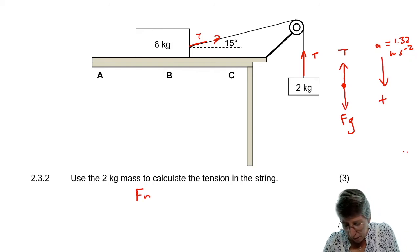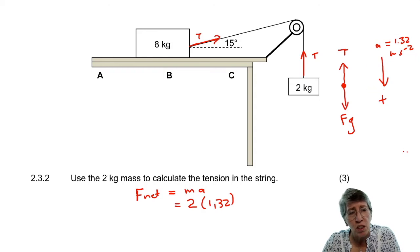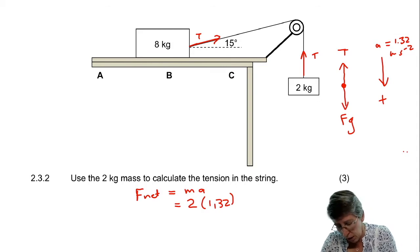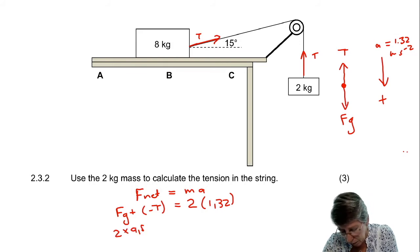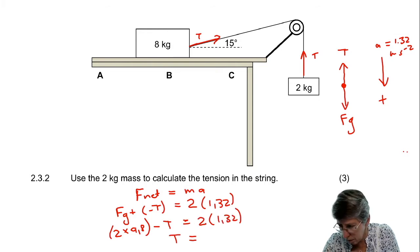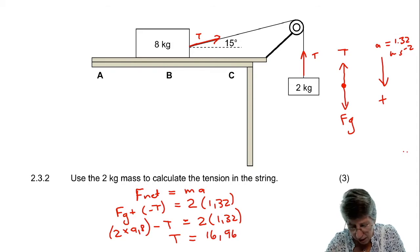Starting with F net equals M times A: since we're using downwards as positive, gravity is a positive value and T is a negative force. So we have gravity minus T equals 2 times 1.32. Gravity here is 2 times 9.8. Solving for T gives 16.96 N.